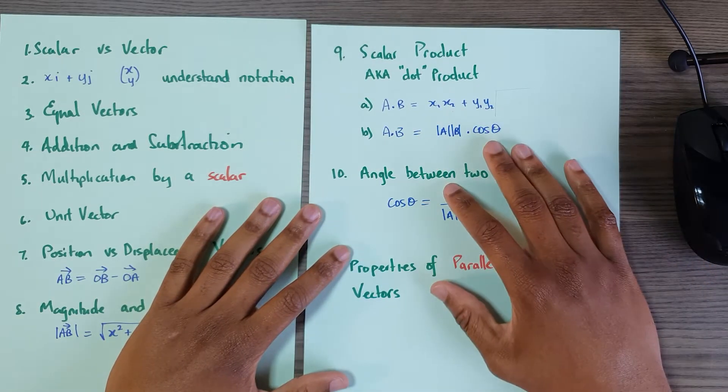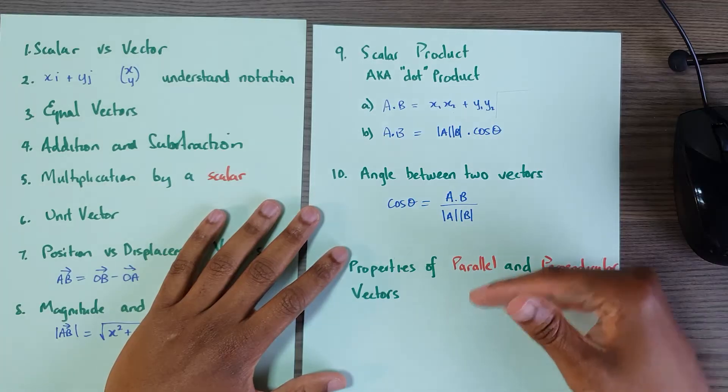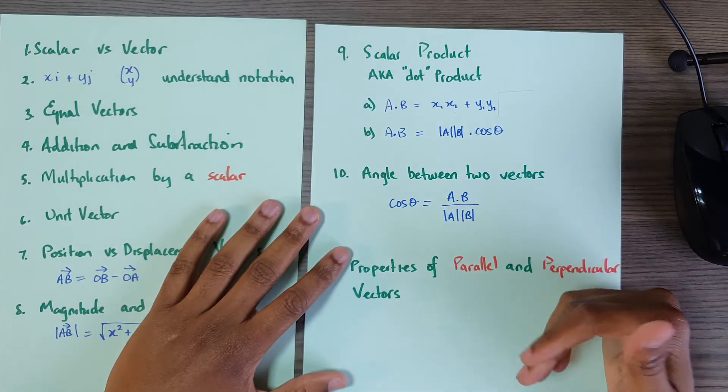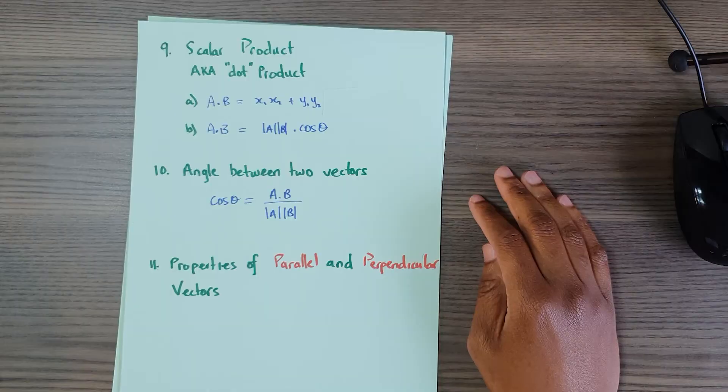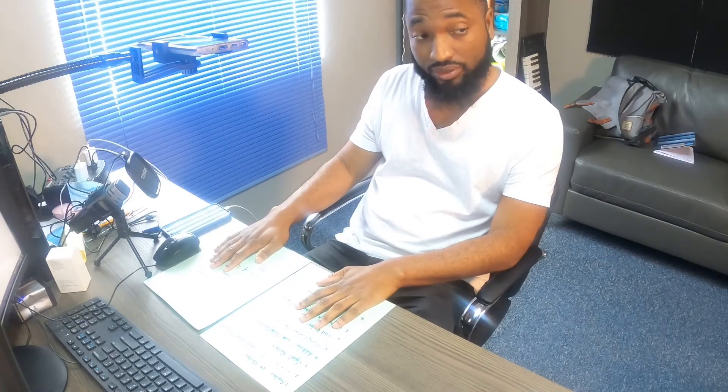The bulk of the marks come from understanding the dot product, the angle between two vectors, and the properties of parallel and perpendicular vectors. The next series of videos will cover the whole of vectors for CSEC Ad Maths — you can browse through them or use them to plan a study session. This is what you need to understand and do for vectors.